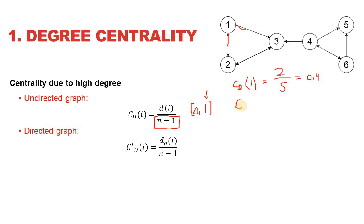The degree centrality of node 3 can be calculated as CD(3) equals 3 divided by 5, and that is going to give it a value of 0.6. So this way we can calculate the degree centrality of all the nodes with the graph being undirected.